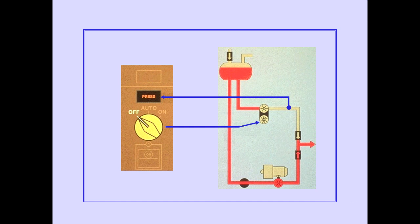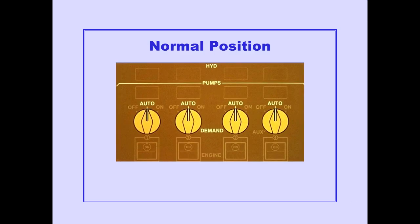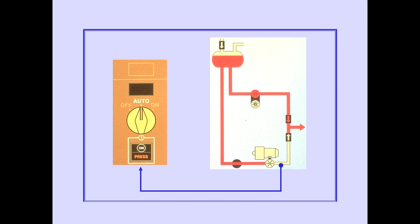When the demand pump selector is in the off position, the demand pump does not operate and the demand pump low-pressure light illuminates. The normal position for the demand pump selector is auto. With the selector in auto, the demand pumps operate automatically when engine pump pressure is low. During normal operations, the demand pump pressure light will remain extinguished.